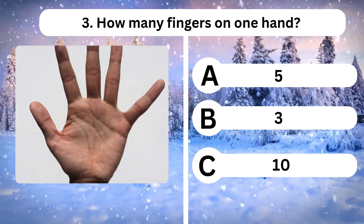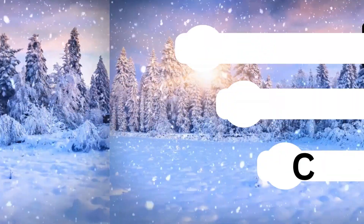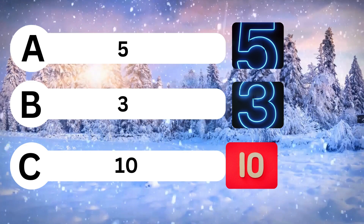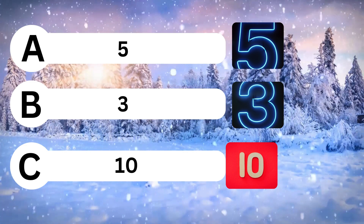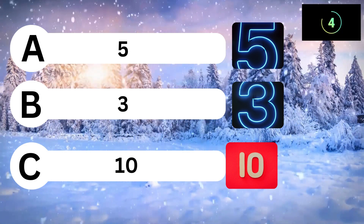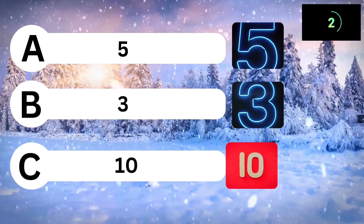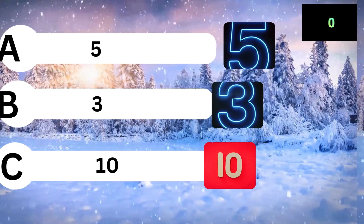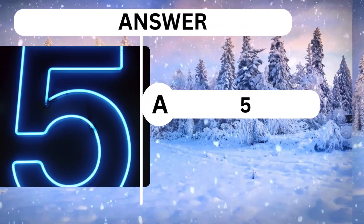Question 3. How many fingers on one hand? A. 5. B. 3. C. 10. Answer is A. 5.